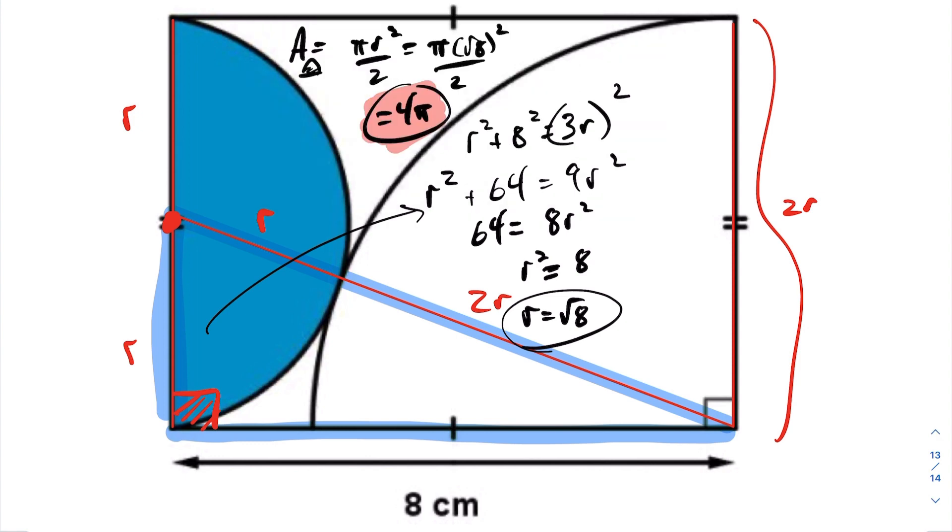So for this question here, the area of the semicircle shaded in blue is equal to 4 pi. Thank you.